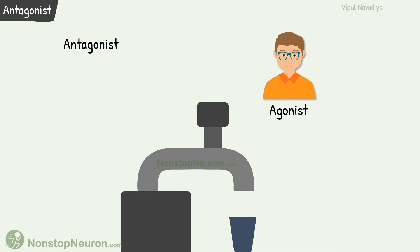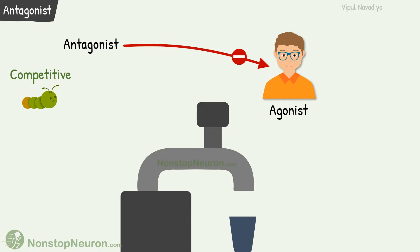Now, antagonists. They basically prevent the action of agonist. They can be of two types: competitive antagonist and non-competitive antagonist.